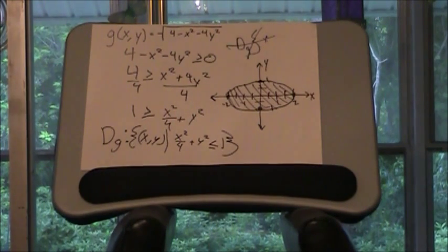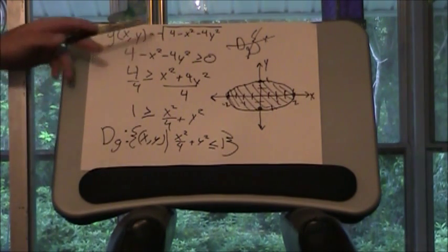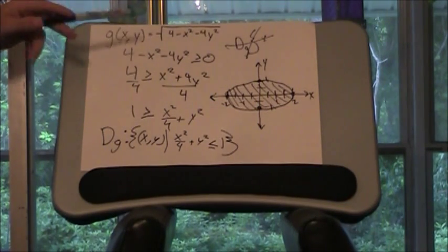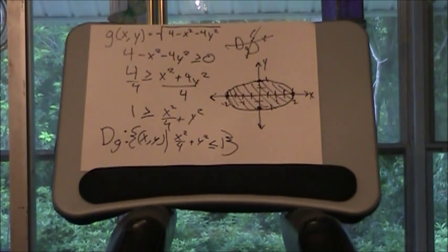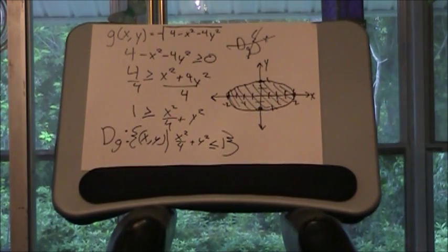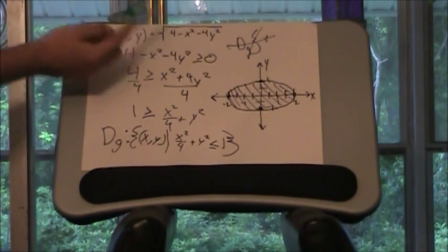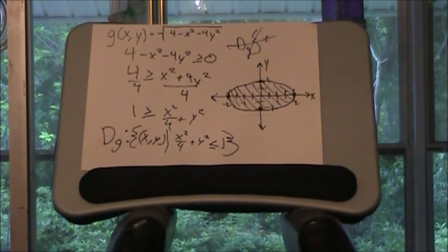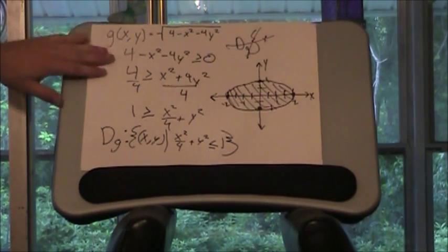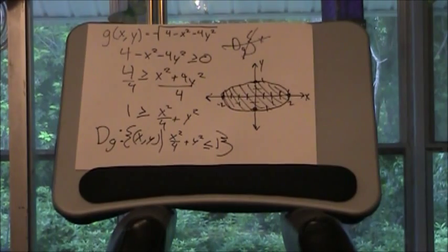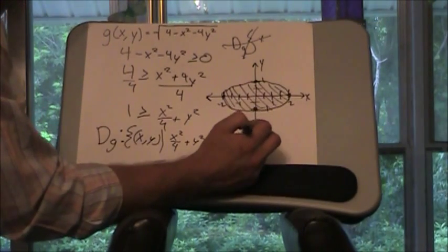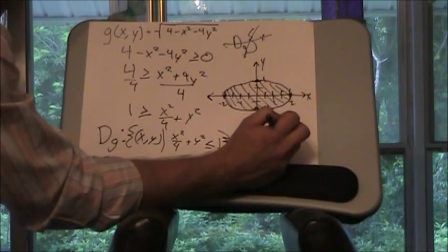Again, no real number on this domain can be plugged in to make any of this a negative number. And so, x squared can never be negative, so you'll never be adding anything to this 4. So, a normal square root function has the domain of 0 to infinity, but because this has a 4 minus x squared minus 4y squared, the greatest that this function will ever be is the square root of 4 or 2. So the range on this is 0 and 2 inclusive.